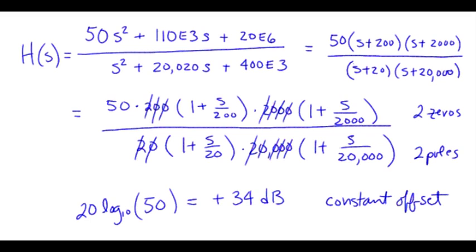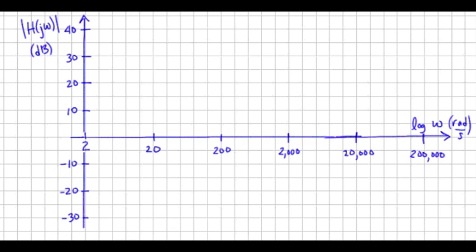Now, this particular transfer function has all of its breakpoints at multiples of 2, like 20, 200, 2,000, and so on. So I'm going to construct my graph based on decades oriented at 2. So here's my plot with properly labeled axes, units. It's also a log scale in frequency.